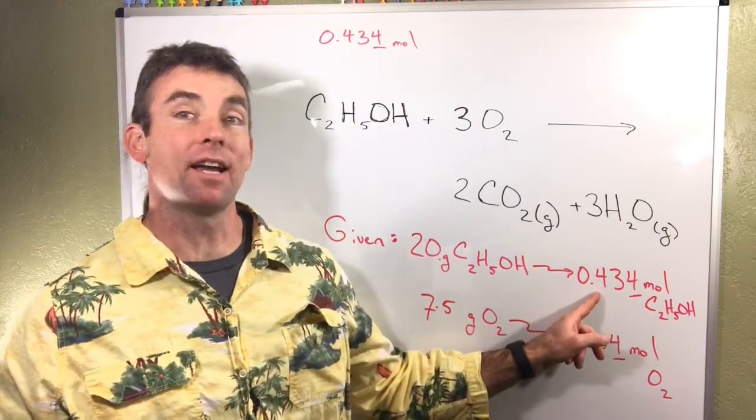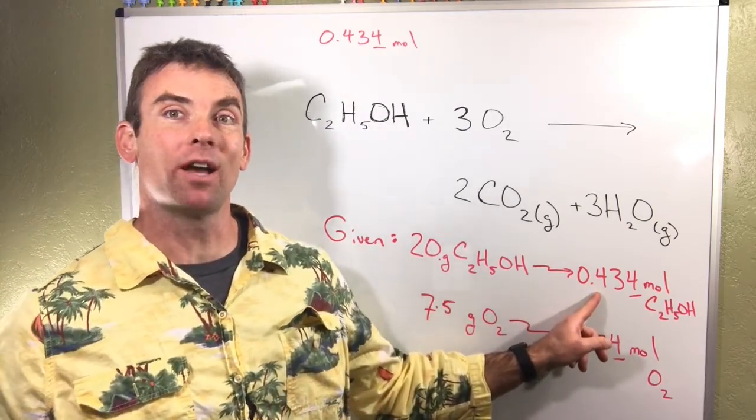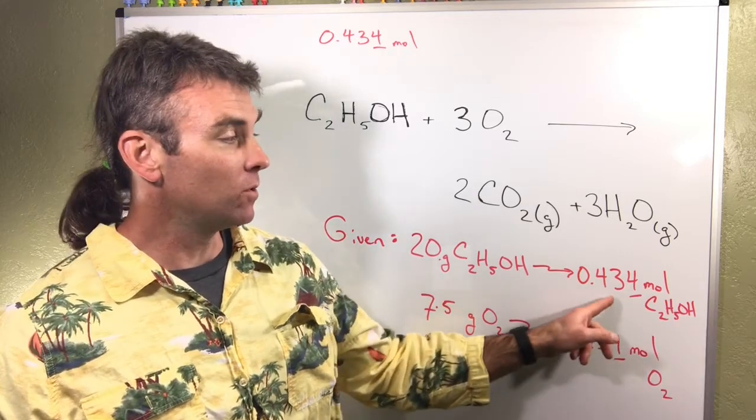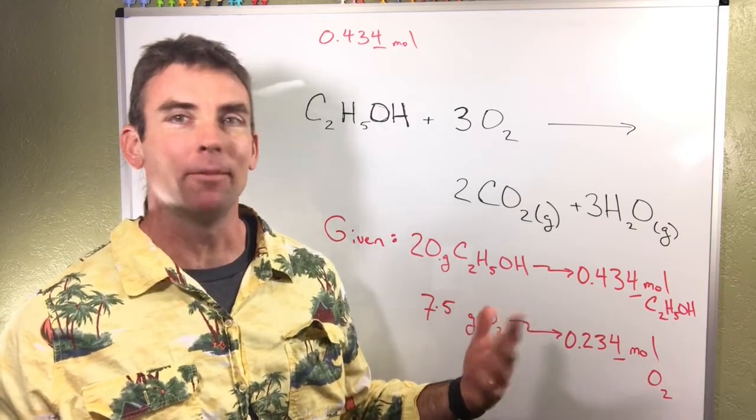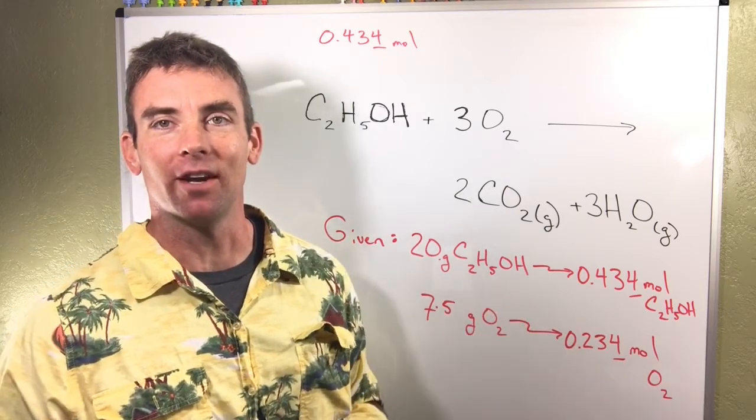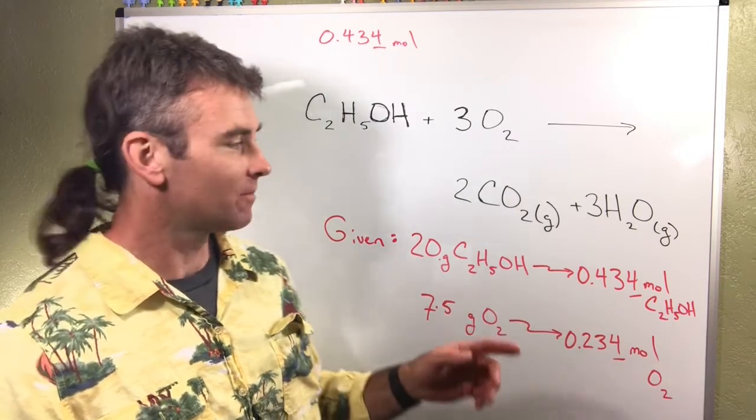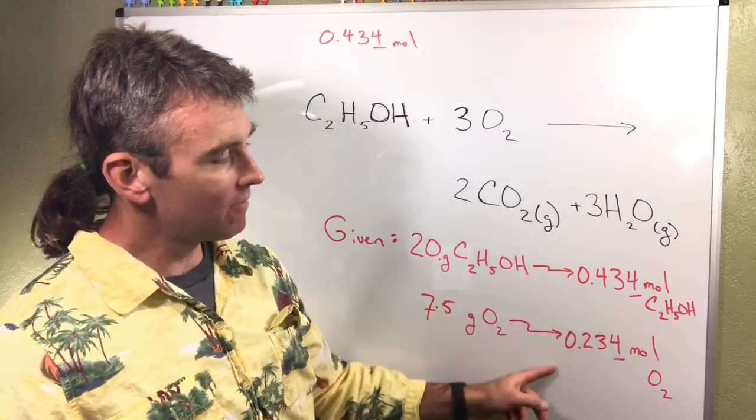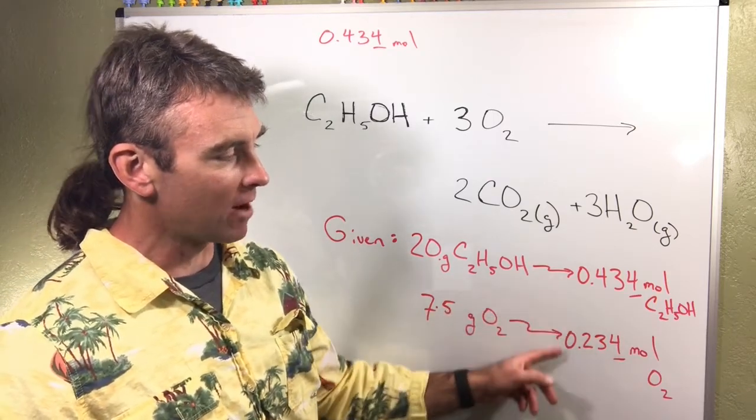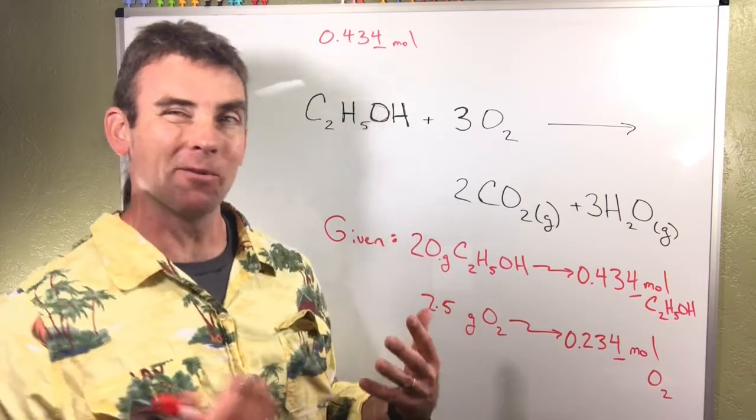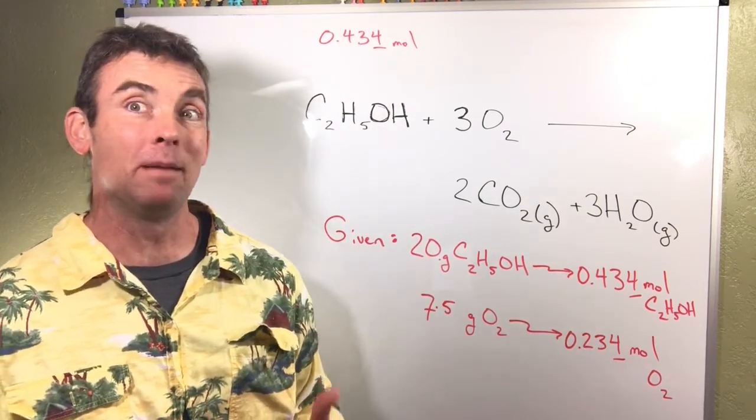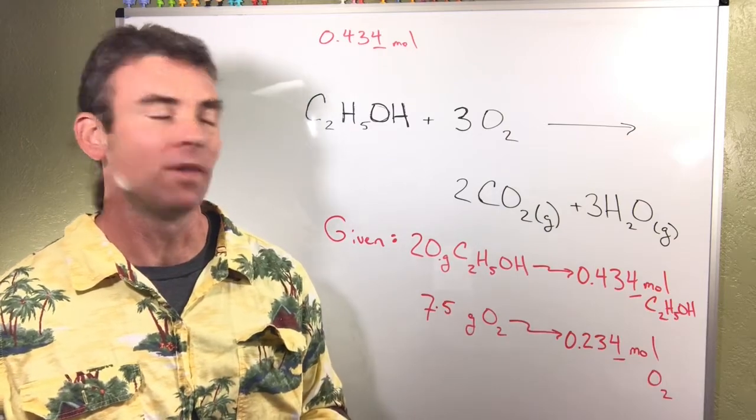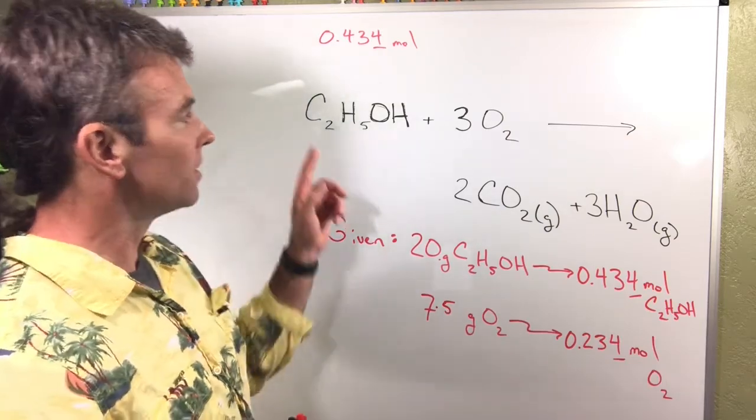We've calculated using the molar masses to determine the number of moles of each. I didn't show the steps but we should know how to do that already. Remember, anytime we're given grams we convert to moles using molar mass. Now we have a situation where we're comparing apples to oranges and we're not sure which is truly the limiting reagent.